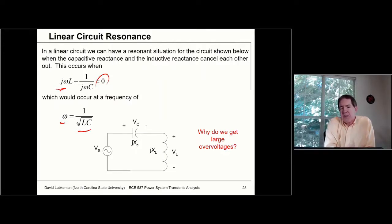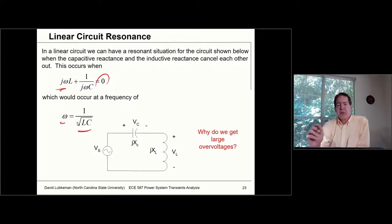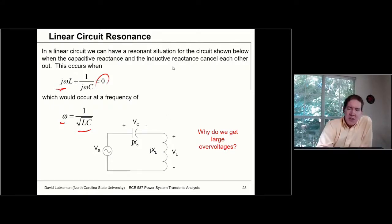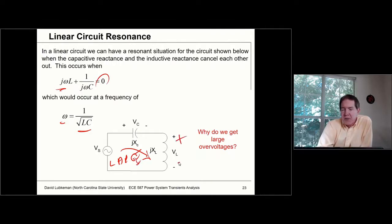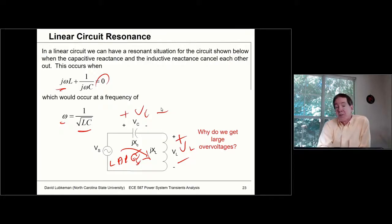The issue is that this interaction can occur at frequencies you actually encounter in practice. Because if you have series resonance, this is going to cause a large current flow. And whenever you have a large current flow, it's going to cause a large value of voltage across the inductance and also a large value of voltage across the capacitance. What we're more concerned about, since the inductance usually dominates, is this particular overvoltage.